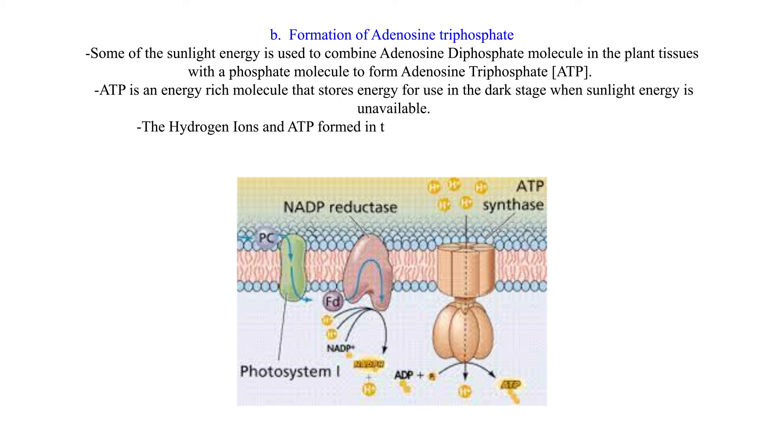The hydrogen ions and ATP formed in the light stage are later used in the dark stage.